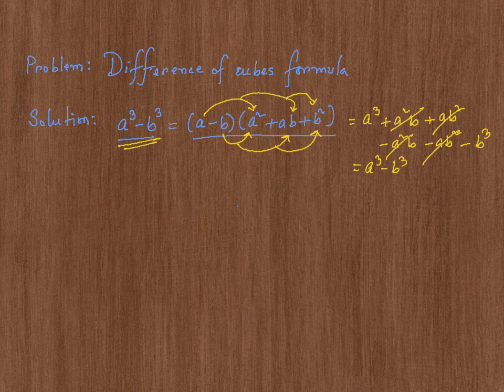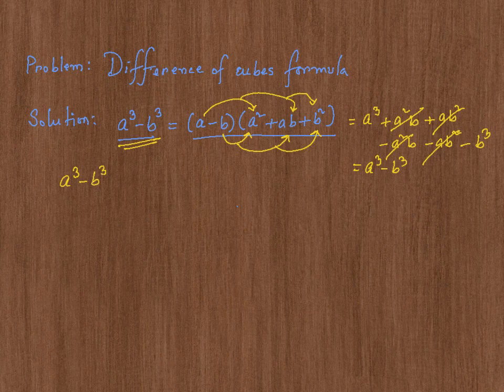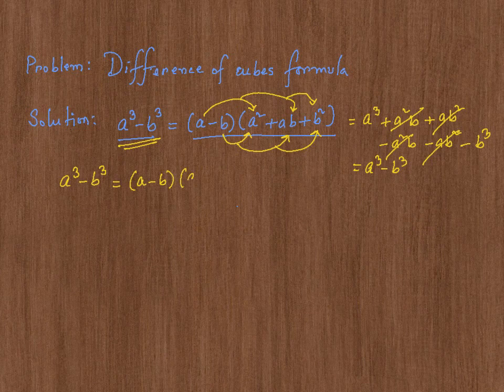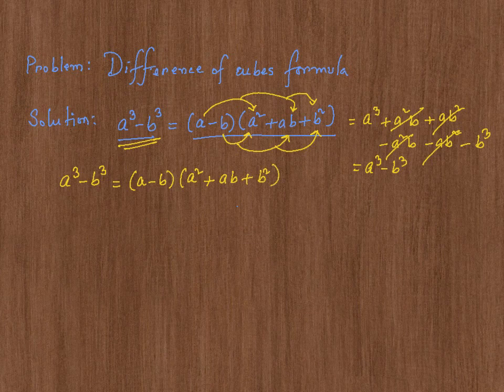Exactly what you have started with. So our formula for difference of cubes is a cube minus b cube equals a minus b times a square plus ab plus b square. Now, let's go ahead and give an example so you can see things in action.